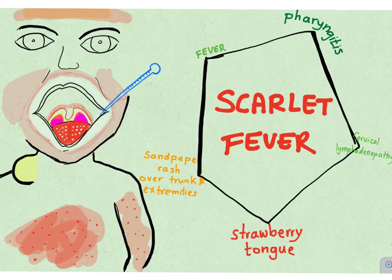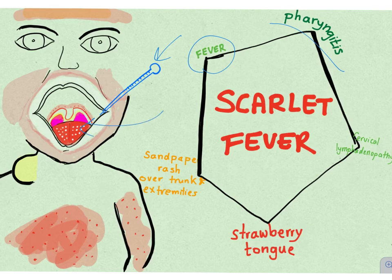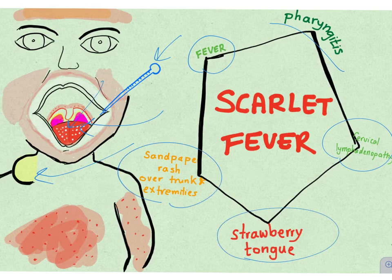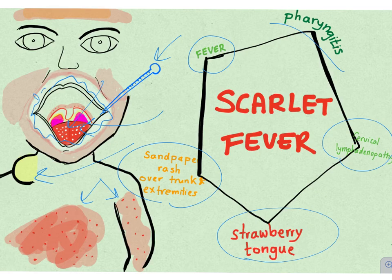Scarlet fever has some important characteristics: fever, pharyngitis, cervical lymphadenopathy, strawberry tongue, circumoral pallor, and a sandpaper-like rash over the extremities and the trunk.